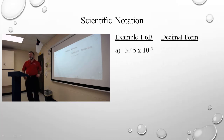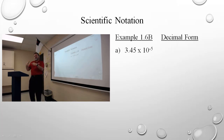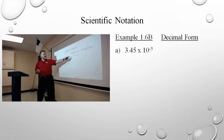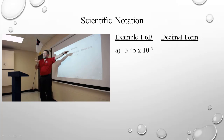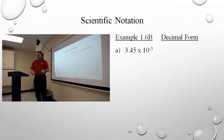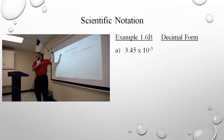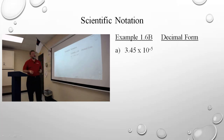Now we're going to work the other way. Remember I said scientific notation helps you preserve the significance of the zeros. We're going to see in a few cases here how we lose that when we go from scientific notation back to decimal form. If scientific notation helps us preserve the significance, then moving to the decimal form will cause us to lose the significance.